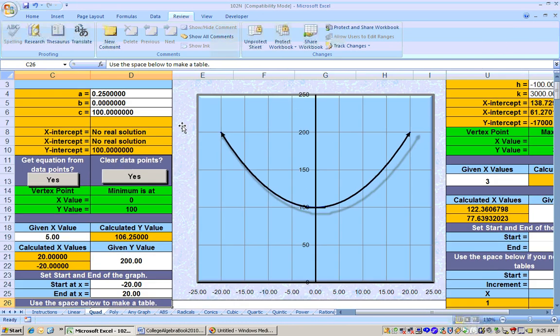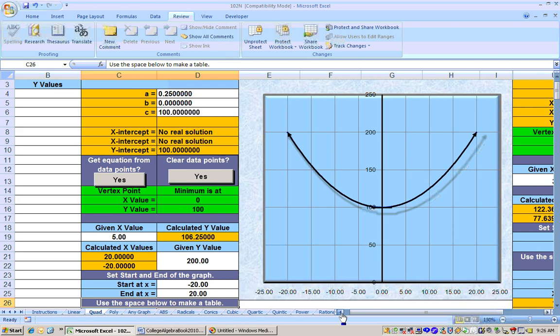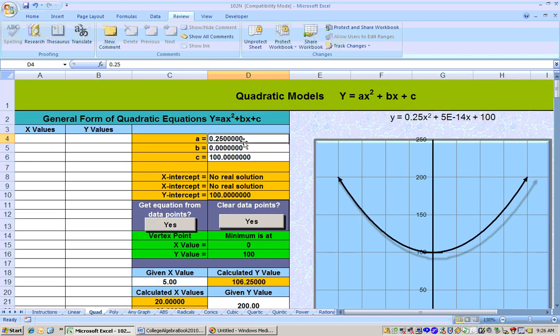So 0.25 is my quadratic coefficient, my linear coefficient. There was no X to the first power, and my constant is 100. Once you get that in there, the lowest it comes to the ground is 100 feet, so that answer is part A.